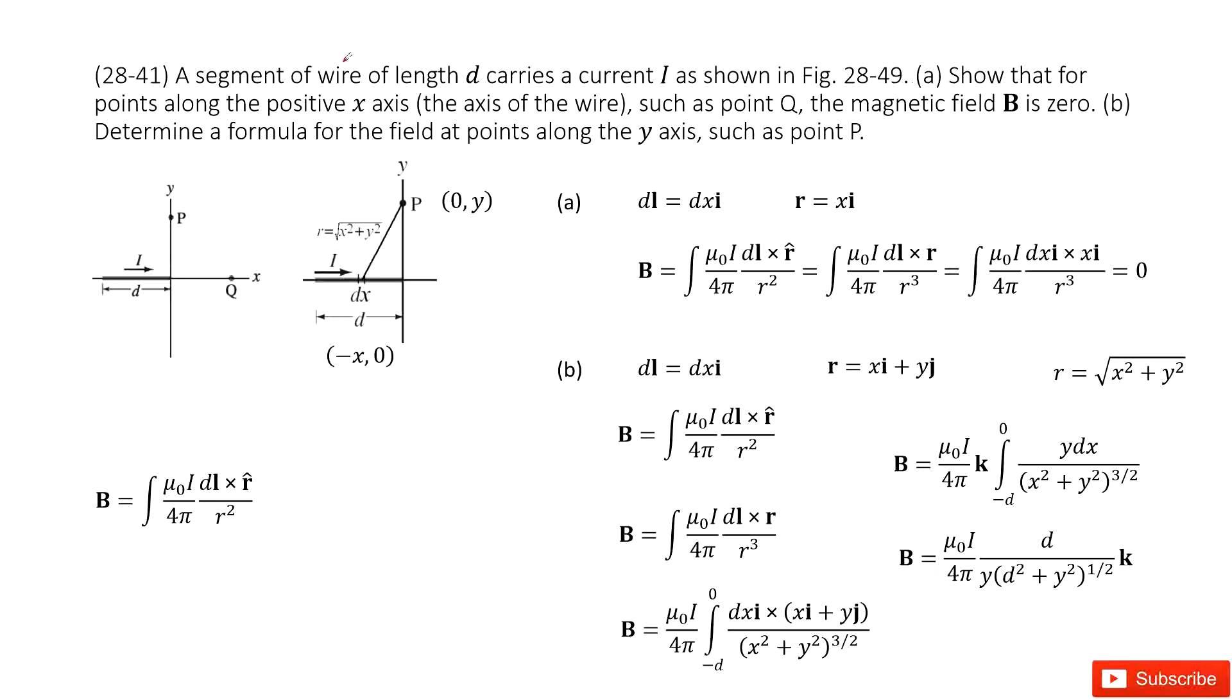So part 1, we need to find the magnetic field at Q position. How can we do that? As we talked about, in this case, we can see the current. This wire can be split by infinitely small fractions, and then we can consider Biot-Savart laws.